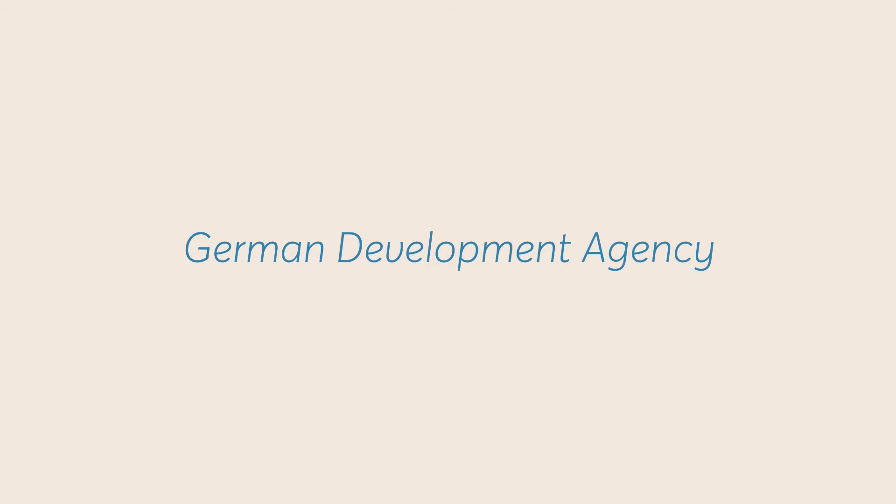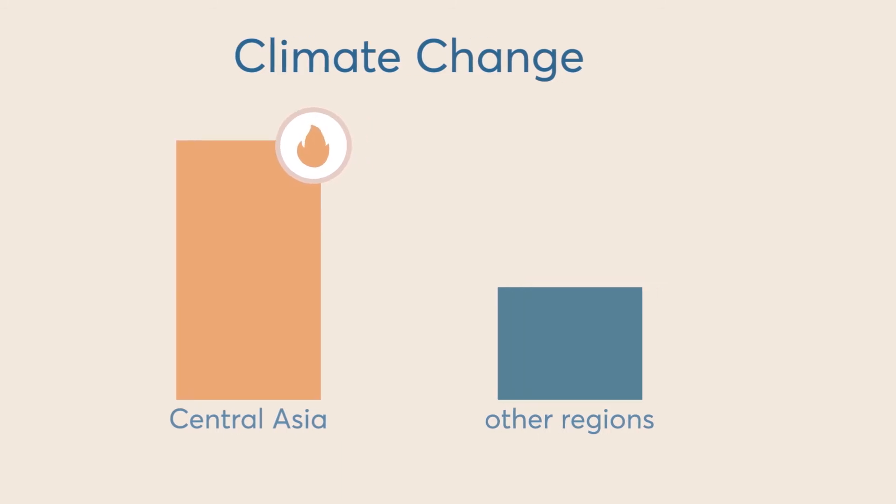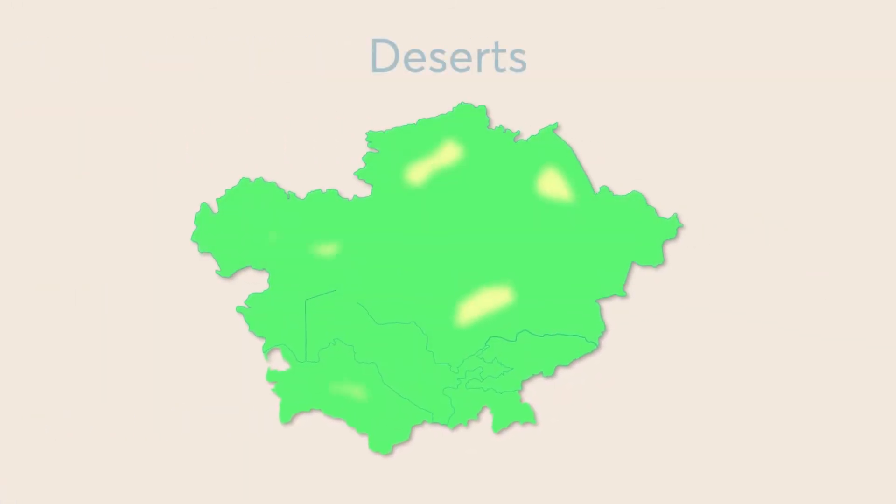According to the German Development Agency's research, the Central Asian region is suffering more from the consequences of climate change than most other regions of the world. It is predicted that the expansion of deserts and arid areas will continue, while such terrain already makes up 80% of the total territory of Central Asia.